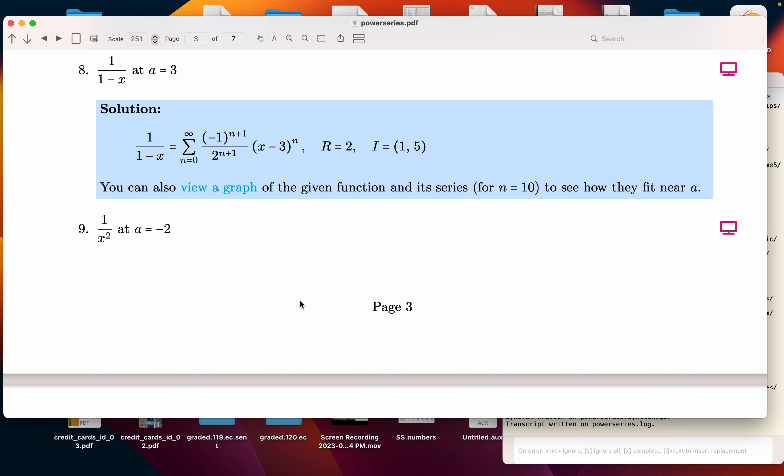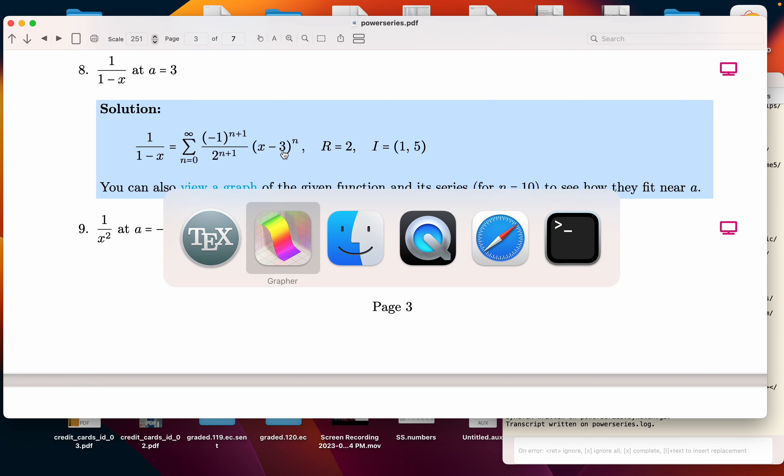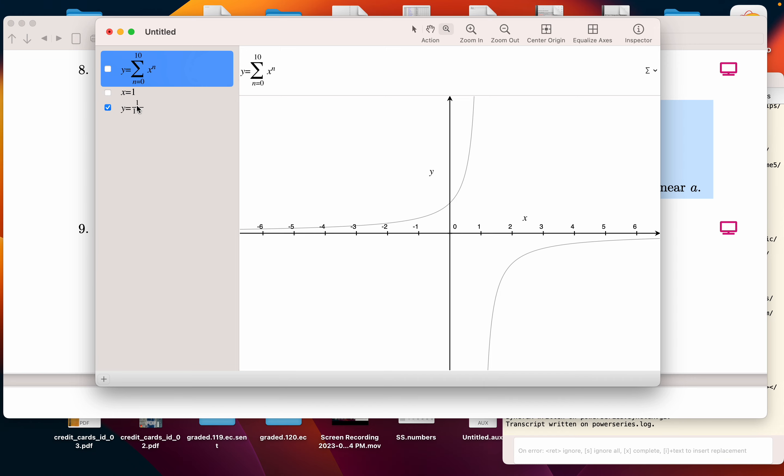It's a rational function, and we're going to expand this. I'll be showing you a Taylor series where the center's going to be at 3. Let's take a look at the function itself. And this is the function over here. It's got an asymptote at 1.